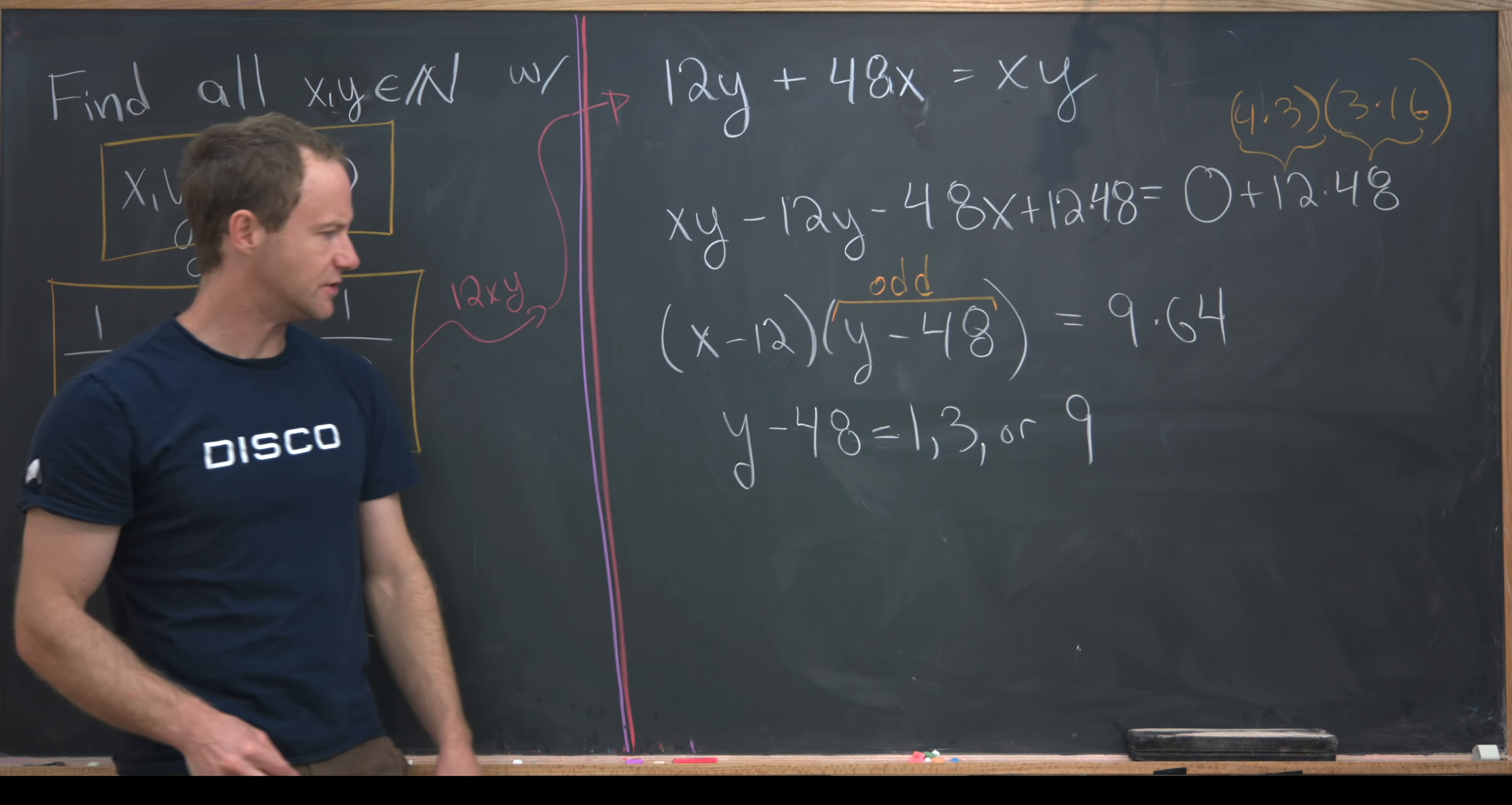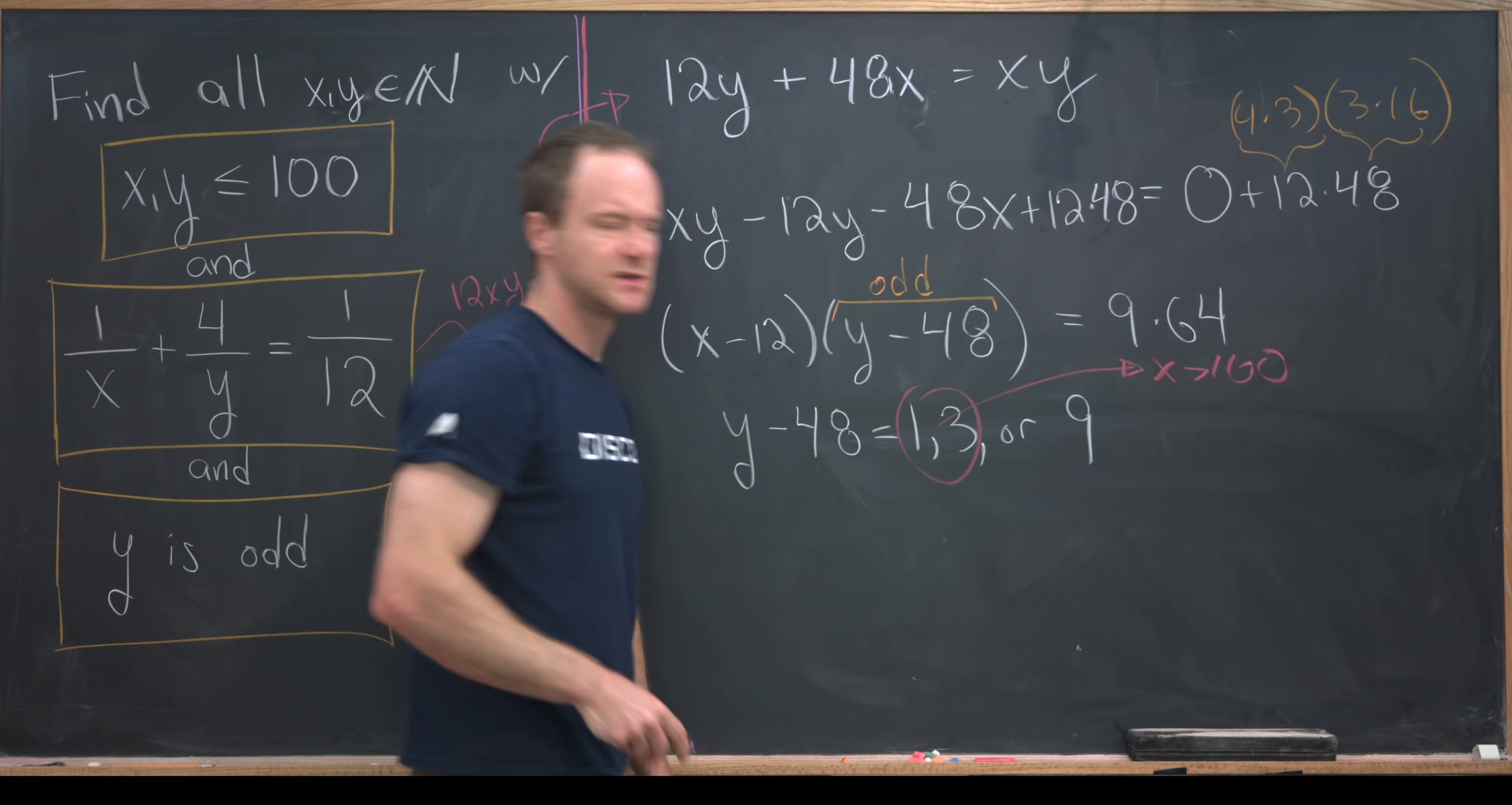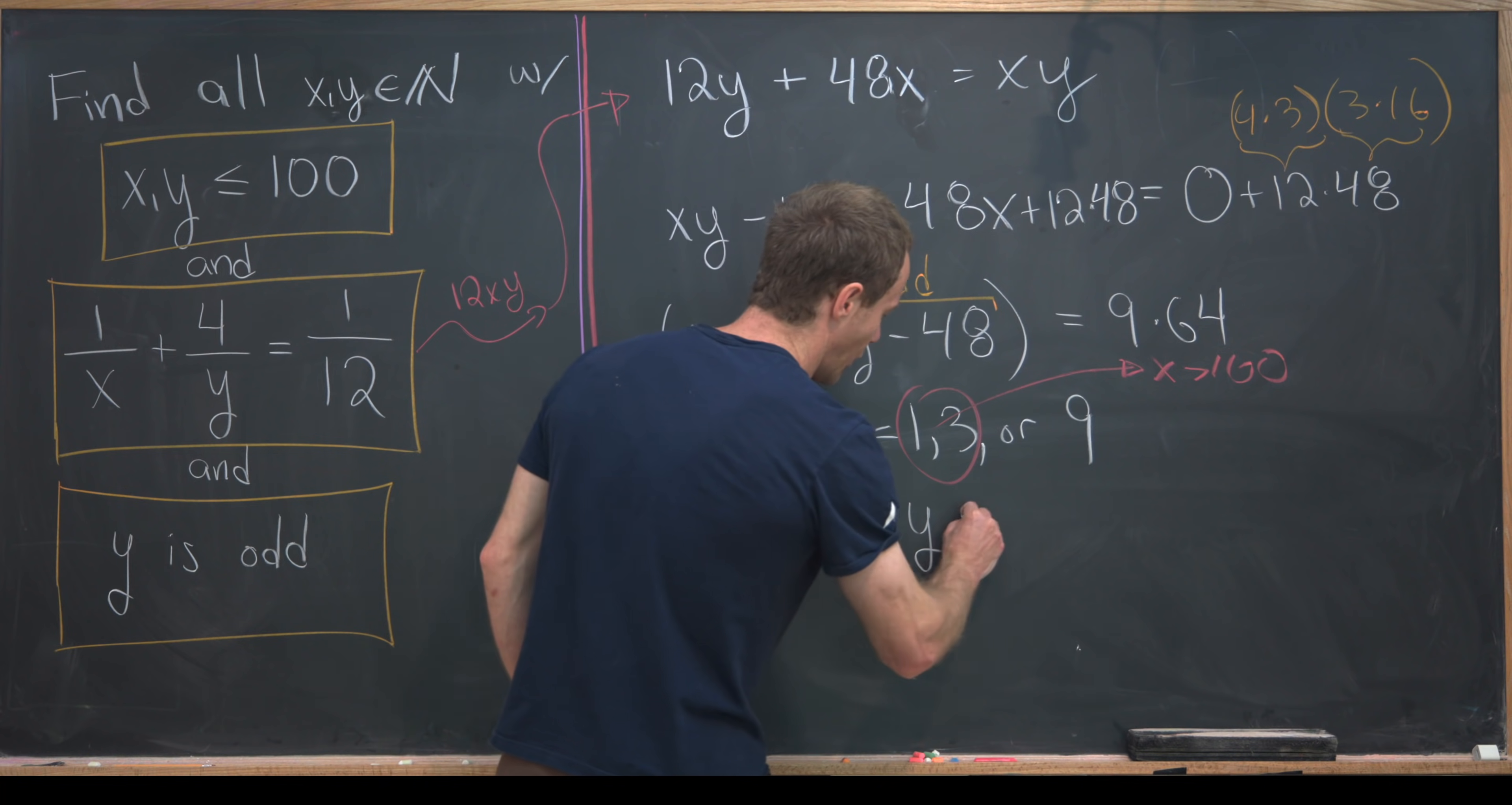Next, I'll leave it to you. But if y minus 48 is equal to 1 or it's equal to 3, this will imply that x is bigger than 100. That's just by fairly simple calculation. So that means y minus 48 must be equal to 9, or y is equal to 57.